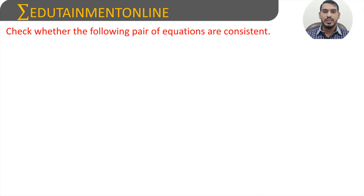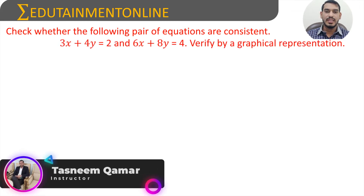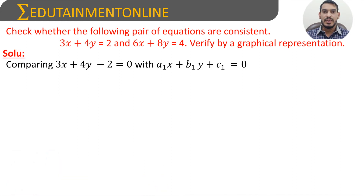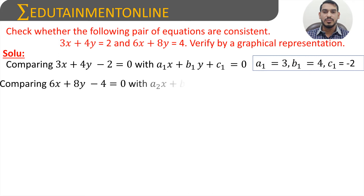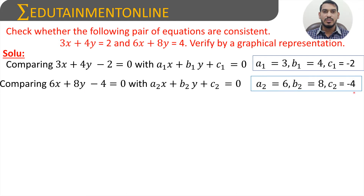Check whether the following pair of equations are consistent: 3x plus 4y equals 2 and 6x plus 8y equals 4, and verify by graphical representation. Comparing the first equation 3x plus 4y minus 2 equals 0 with a1x plus b1y plus c1 equals 0, we get a1 equals 3, b1 equals 4, and c1 equals minus 2. Comparing the second equation 6x plus 8y minus 4 equals 0 with a2x plus b2y plus c2 equals 0, we get a2 equals 6, b2 equals 8, and c2 equals minus 4.